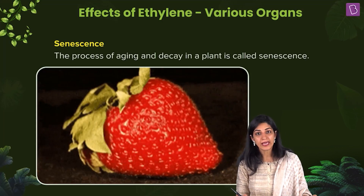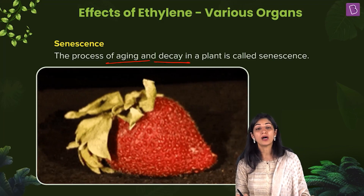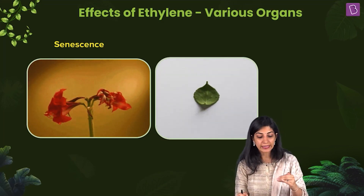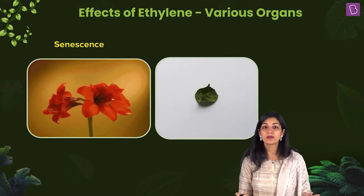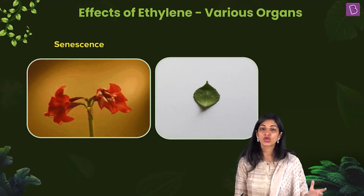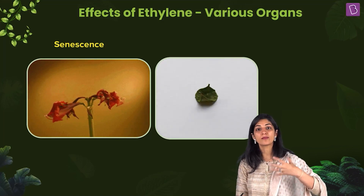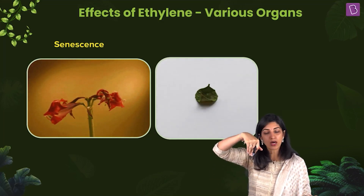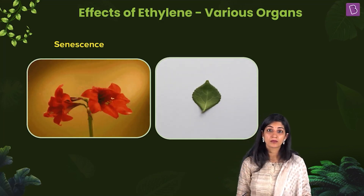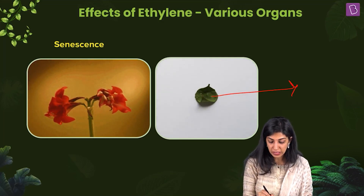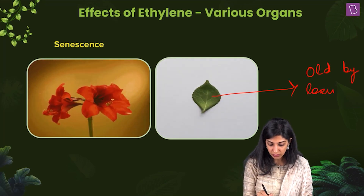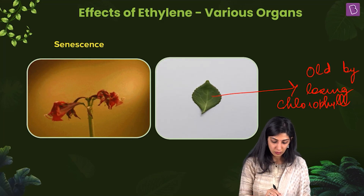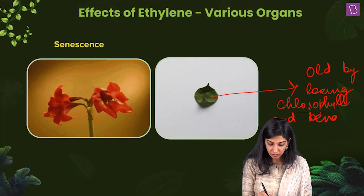Ethylene brings about aging or decay in fruits especially. It can also bring about senescence or the aging process in leaves as well as flowers. You see the flowers withering away, and in leaves, the chlorophyll gets degraded — the leaf becomes yellow or brownish. It will bend downwards — this is called epinasty. So the leaf becomes old by losing chlorophyll and bending downwards.